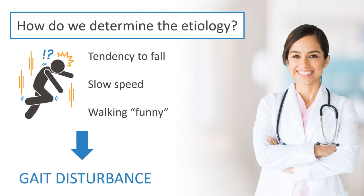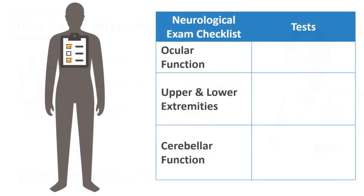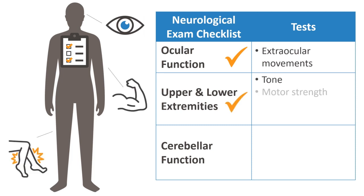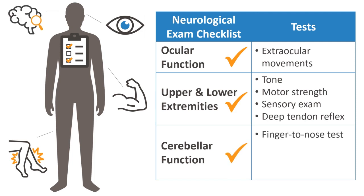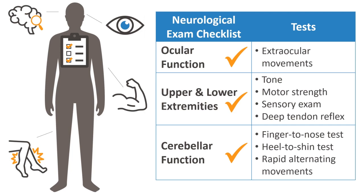The next step is to conduct a neurological exam. The exam should assess key areas, including extraocular movements, tone, and motor strength of the arms and legs, thorough sensory exam of the arms and feet, deep tendon reflexes, and coordination testing of the upper and lower extremities, including finger to nose, heel to shin, and rapid alternating movements.